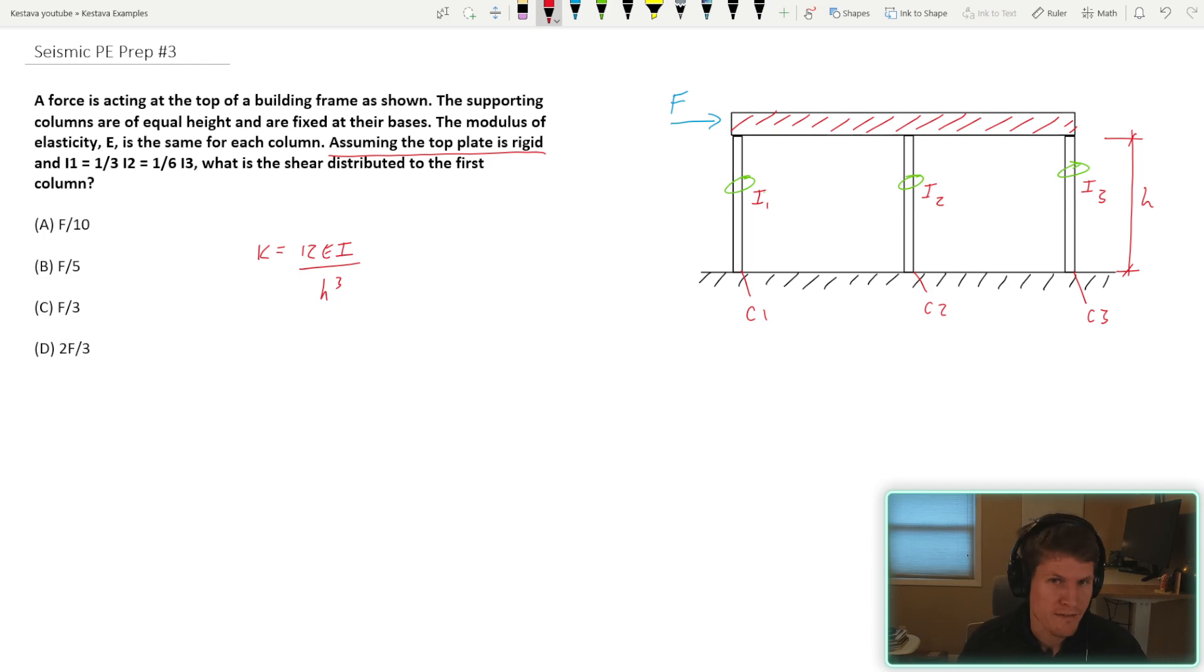So that's denoted as H. Well, today's example, we're not given any of that criteria, but we don't need it because something that's important to reiterate is that force distribution to each one of these columns is dependent upon the relative stiffness between the three columns. So as long as many of their properties are the same, you can actually cross out a lot of the variables within the equation in order to just give a solution in terms of F.